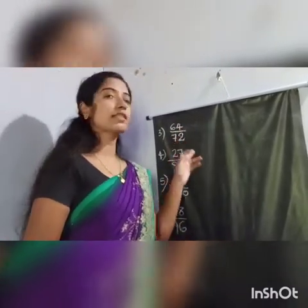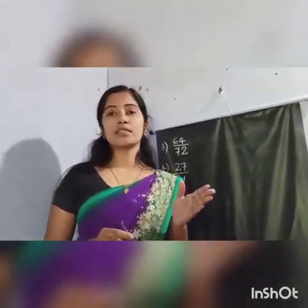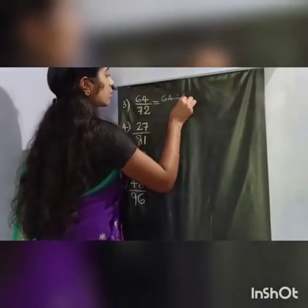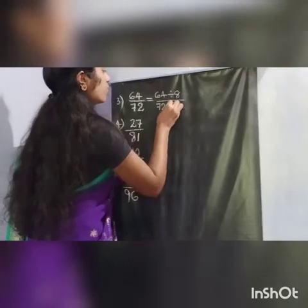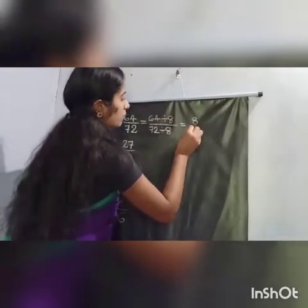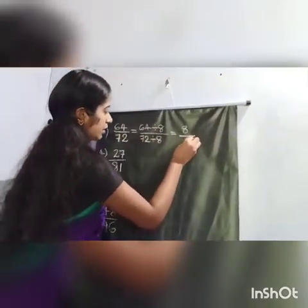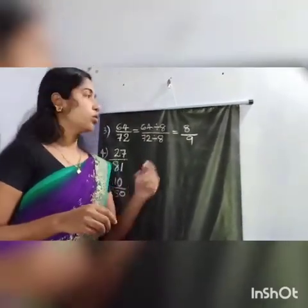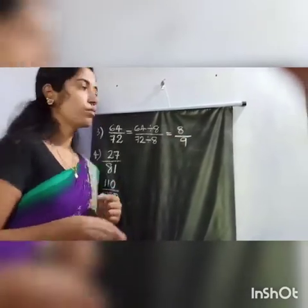Let me show you another example. Find the simplest form of 64 divided by 72. Since 64 by 72 is not in its simplest form, we divide both numerator and denominator by 8. 64 divided by 8 is 8, and 72 divided by 8 is 9. Now 8 and 9 have no common factor other than 1, so the fraction 8 by 9 is the simplest form.